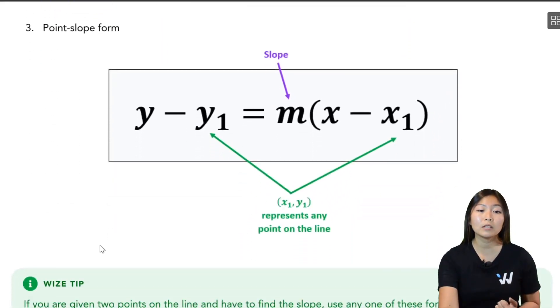Third, we have something called the point-slope form. So as the name suggests, it will give you information about one point on the line and the slope of the line. So this is how this looks like: y minus y1 equals m times x minus x1.